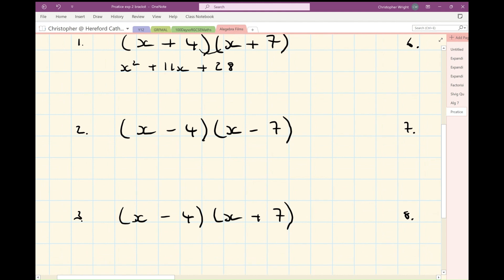Number two, be careful with your signs. I've got x times x is x squared, minus four x minus seven x, minus 11x, minus four times plus seven, plus 28.